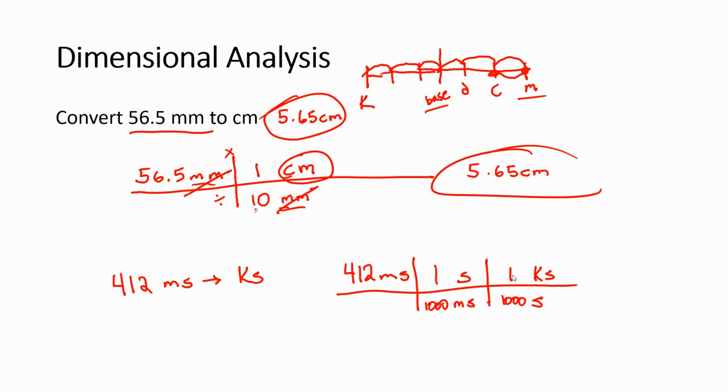And that means that there are 1,000 seconds in every one kilosecond. Let's think about how that affects our units. First, milliseconds cancel out. Second, seconds cancel out. And finally, I'm left with kiloseconds. All I have to do is multiply and divide out.